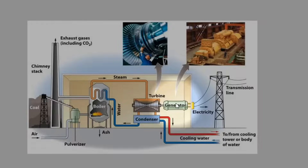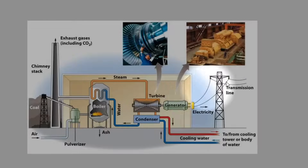Those spinning magnets in the generator produce an electrical current that goes out through transmission lines to consumers who can then use it for whatever purposes.